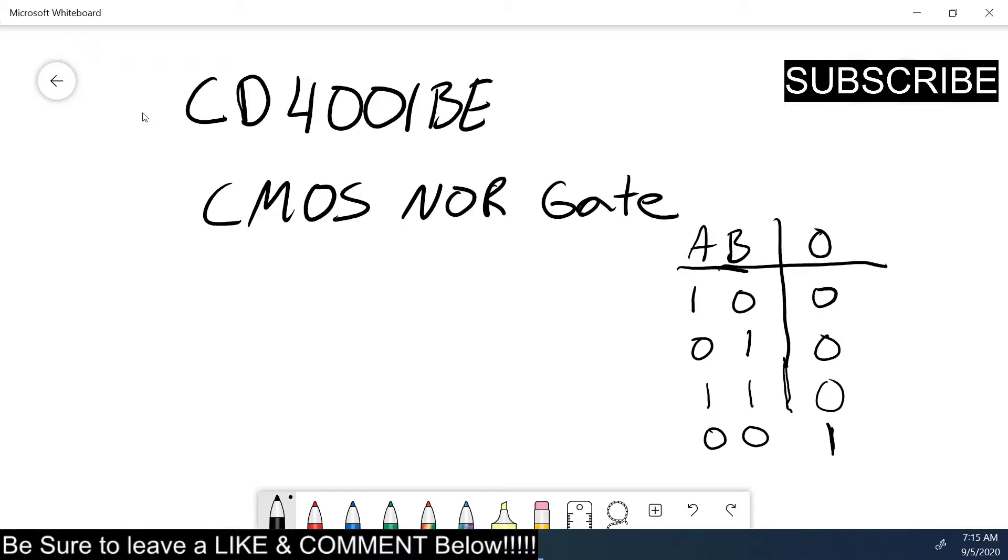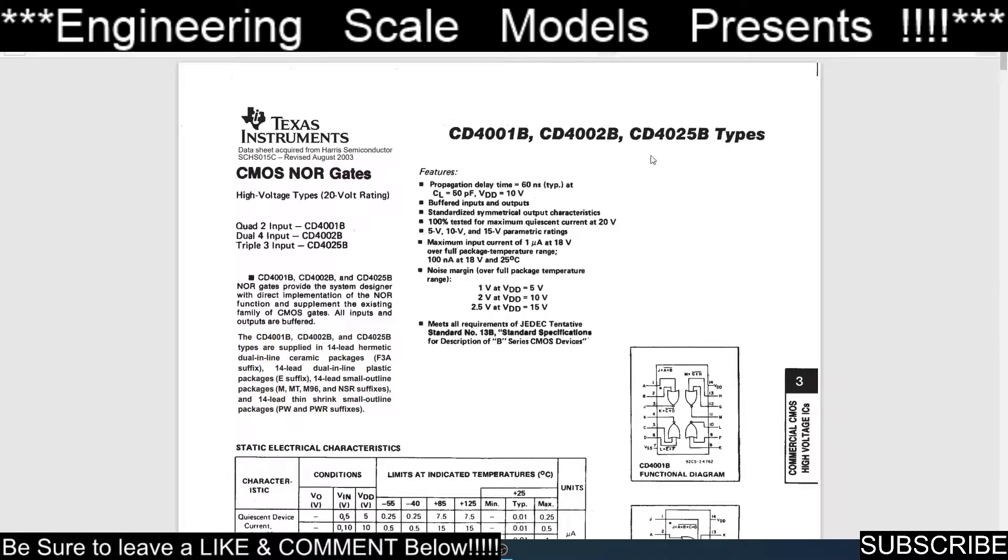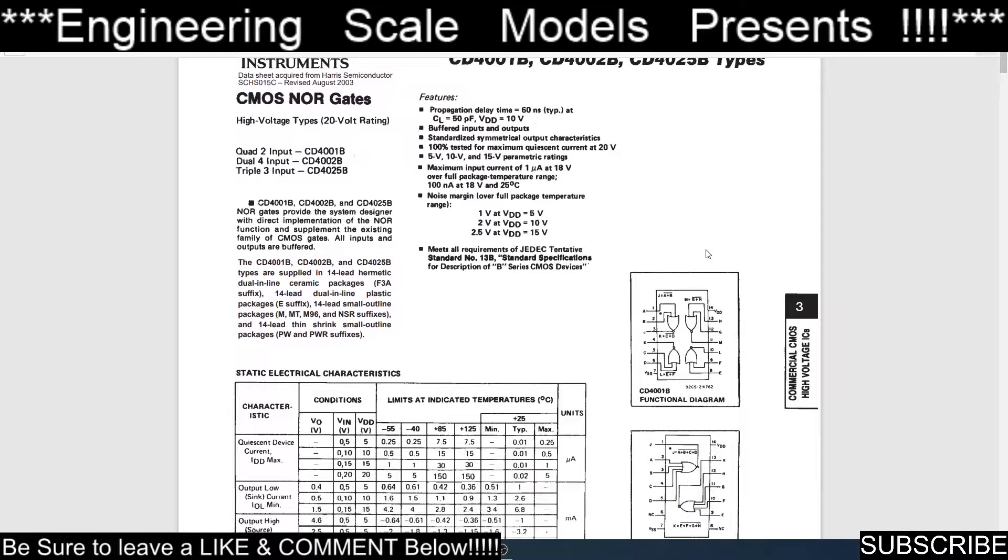I believe that's correct. Let me just check the truth table on the data sheet to make sure. So this is the data sheet for the CD 4001, and this also comes in a 4002 and a 4025, and the difference is the number of inputs on the NOR gates.